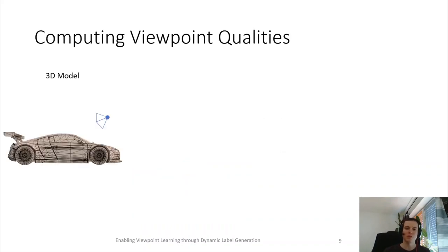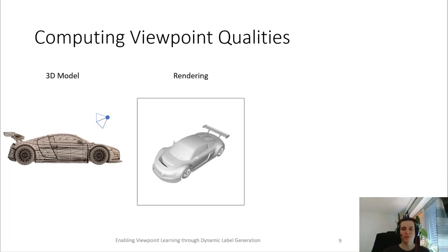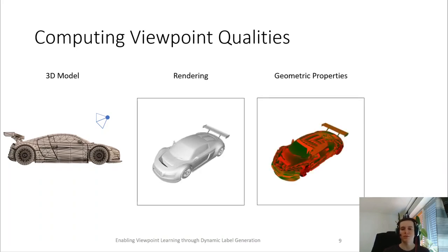To evaluate such a viewpoint quality metric for a given model at a given viewpoint, the model has to be first rendered into a 2D image. During this rendering process, geometric properties of the model are extracted. For example, in the image on the right, you can see the projected area of the individual polygons of the model.